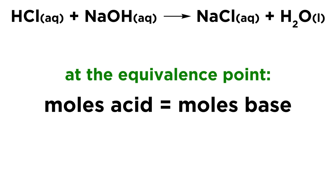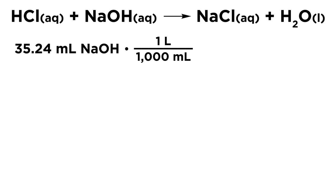So since we want to find out the moles of acid, let's find the moles of base. So let's take our volume of base. We have 35.24 milliliters of base that were required to reach the equivalence point, and let's first convert that into liters.